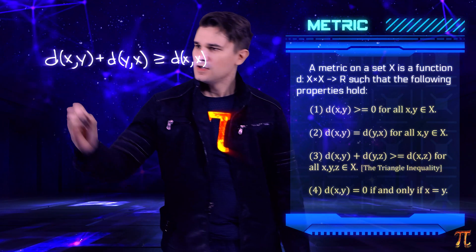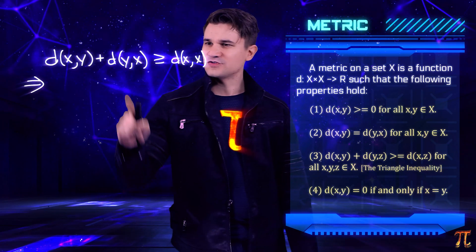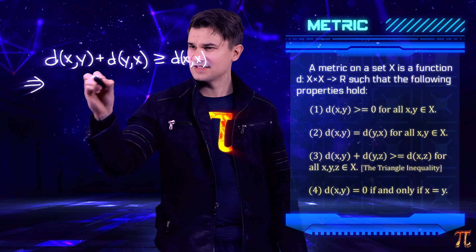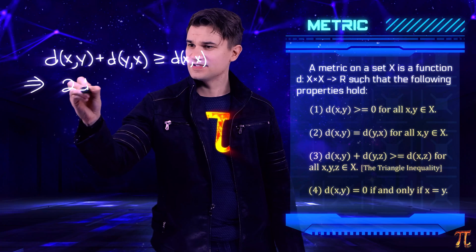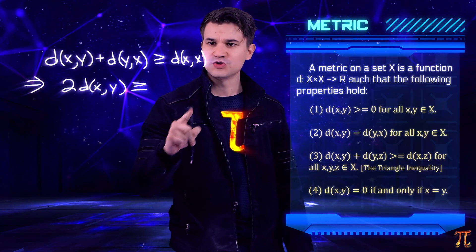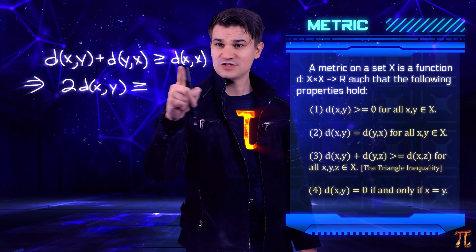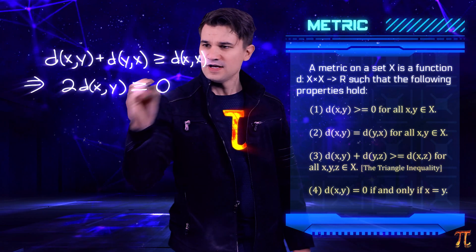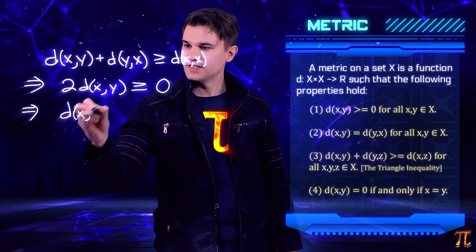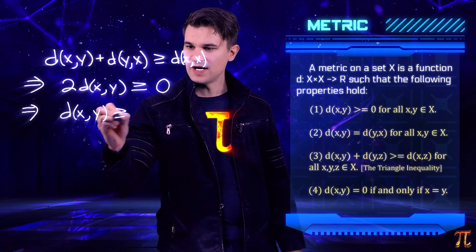But since the distance from x to y is the same as the distance from y to x, we could write this as two times the distance from x to y, and that is greater than or equal to—well, this is zero, the distance from x to itself. And so in conclusion, the distance from x to y is positive.